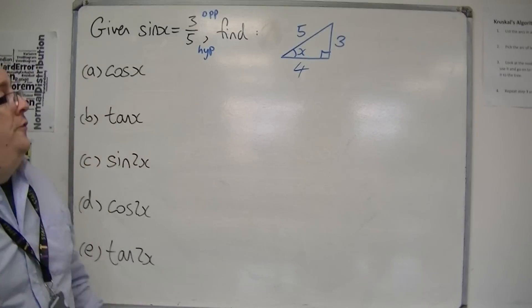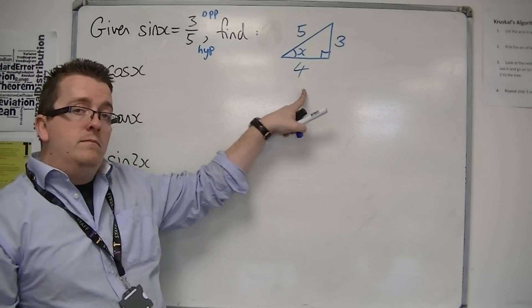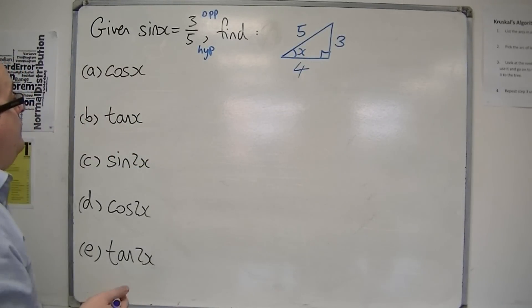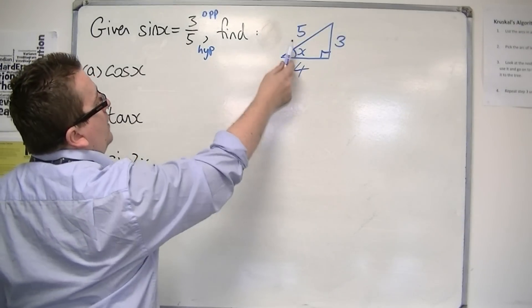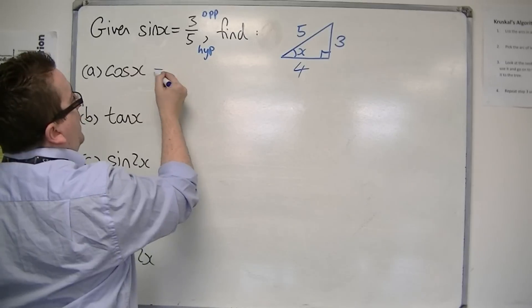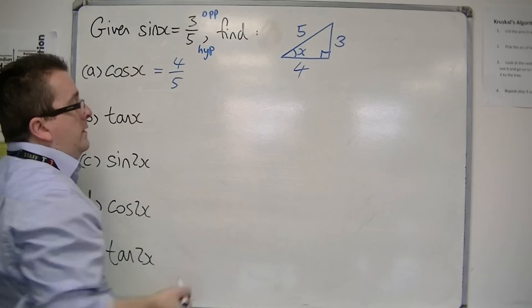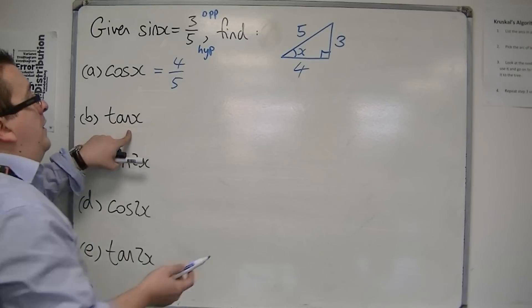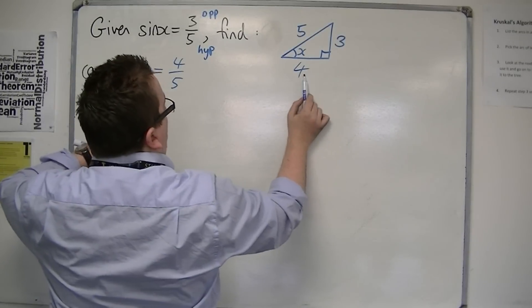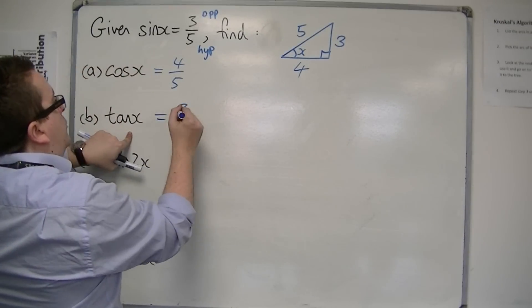5 squared take away 3 squared is 16, square root of it is 4. So cos x is adjacent over hypotenuse, so cos x must be 4/5. That's a nice, easy way of doing it. Tan x is opposite over adjacent, so tan x is 3/4.